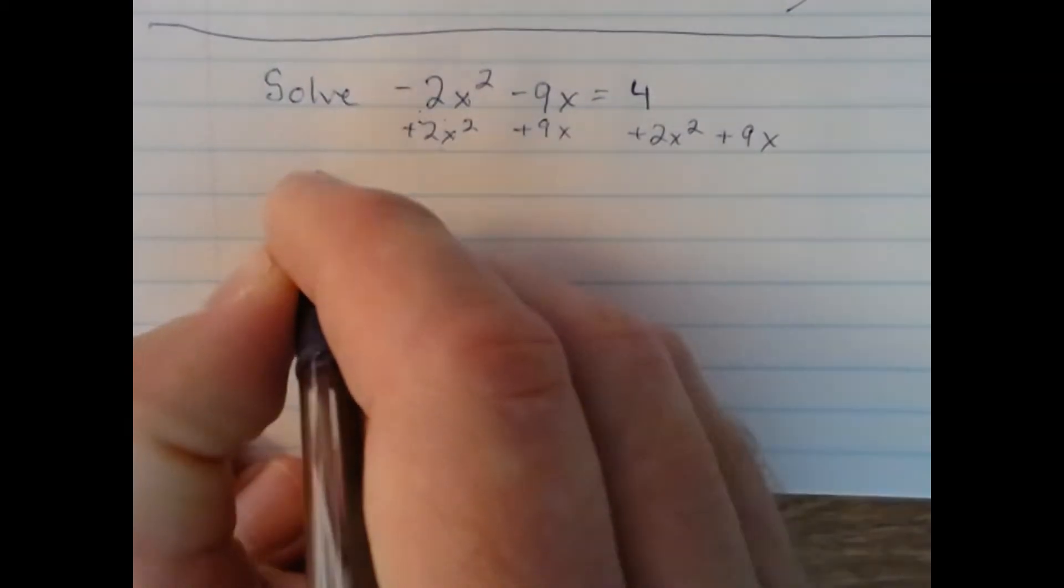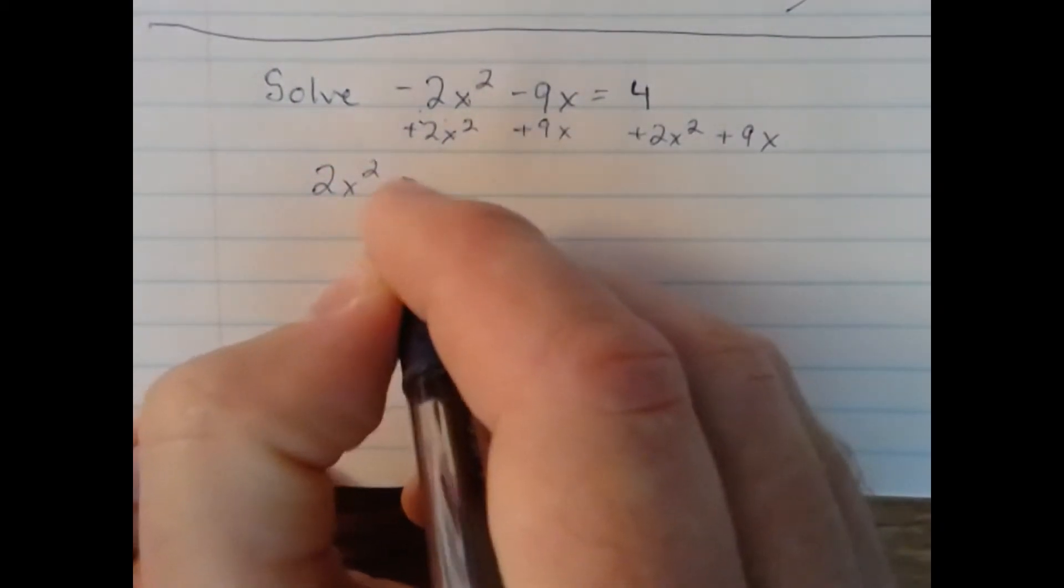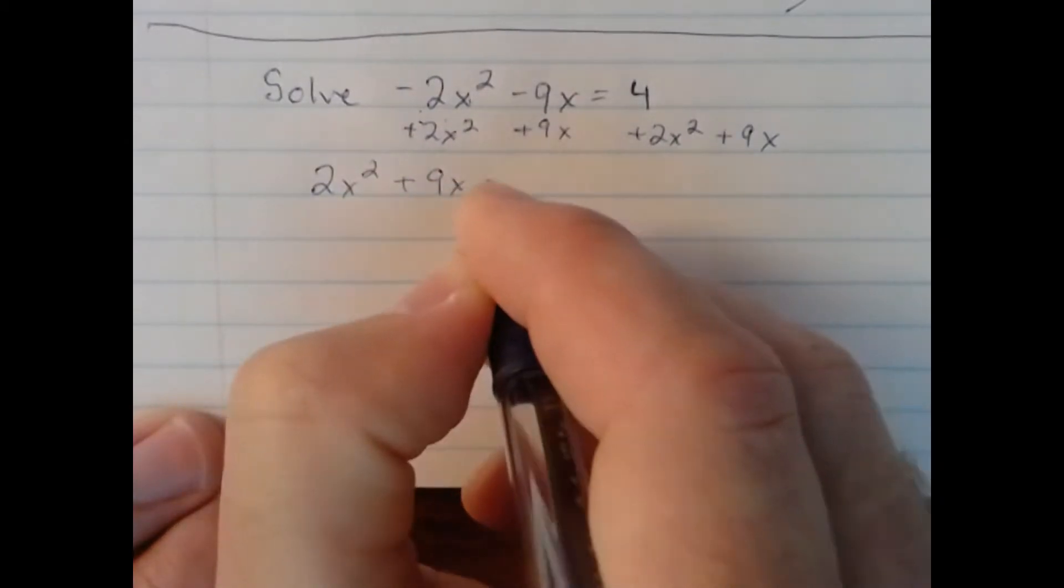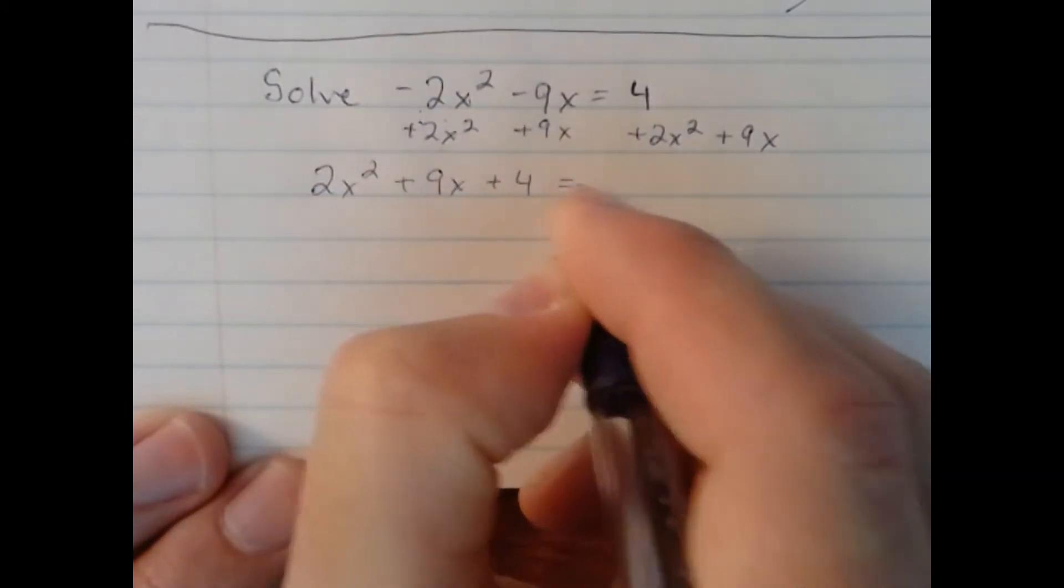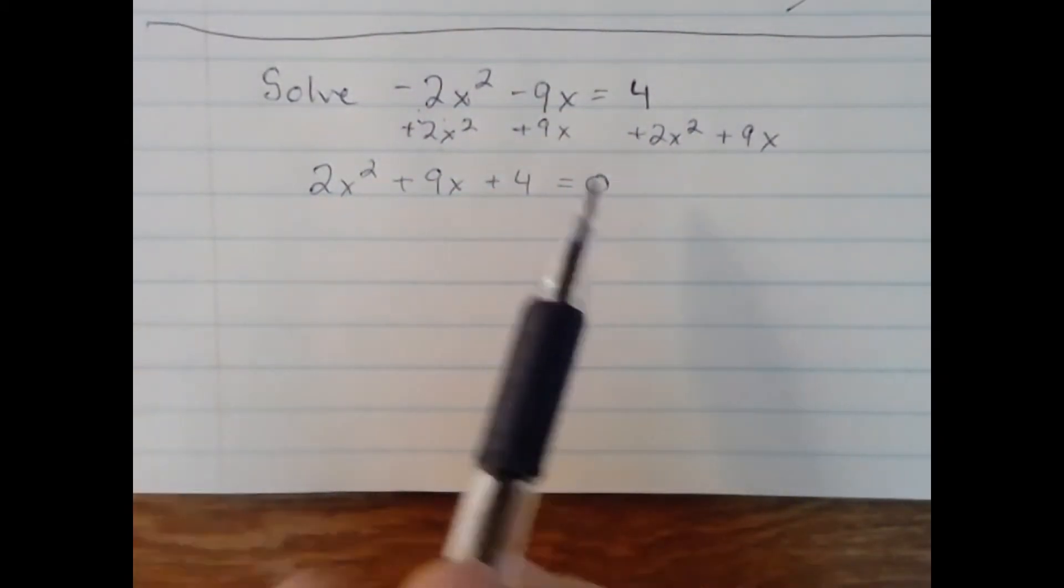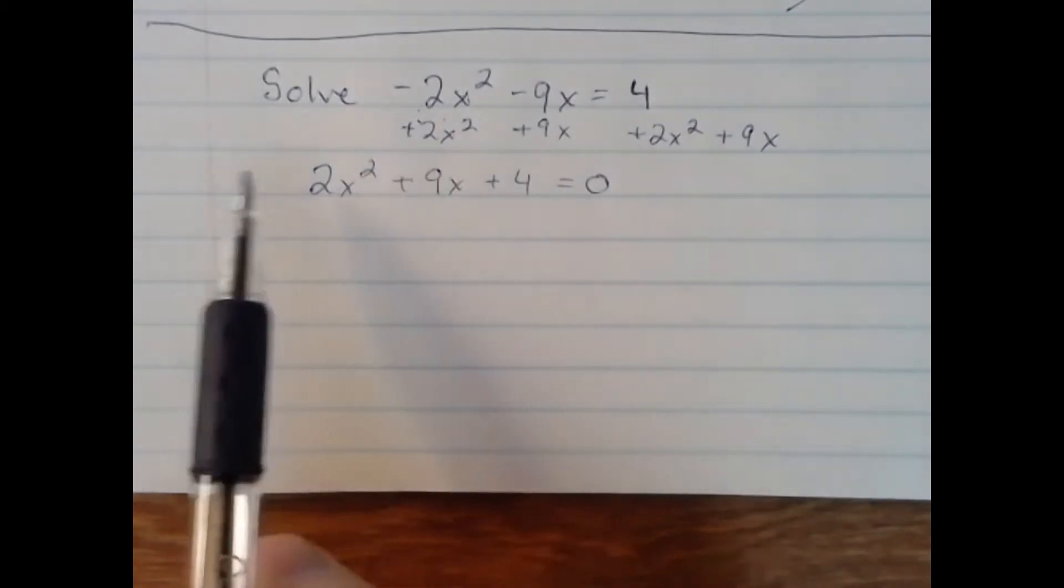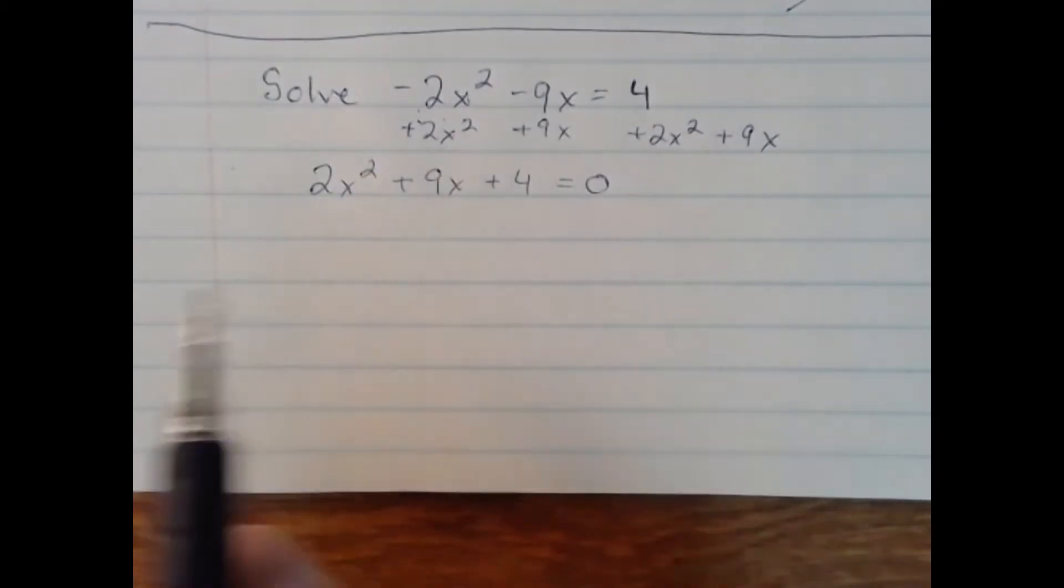What we're left with is 2x² + 9x + 4 = 0. And it does not matter what side you write equals zero on. I could have 0 equals this out here. It's the same process, and it's the same equality.